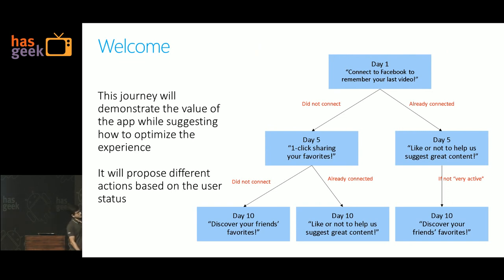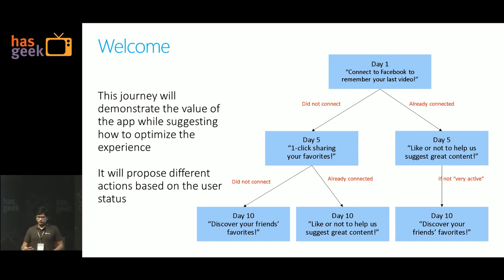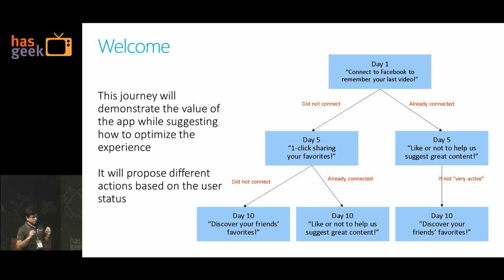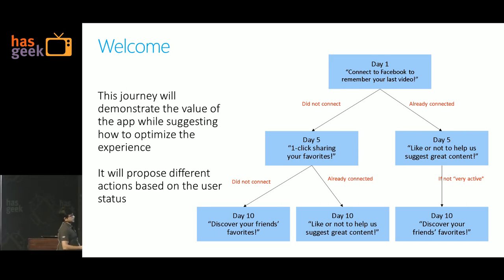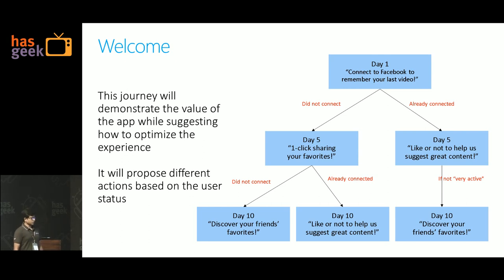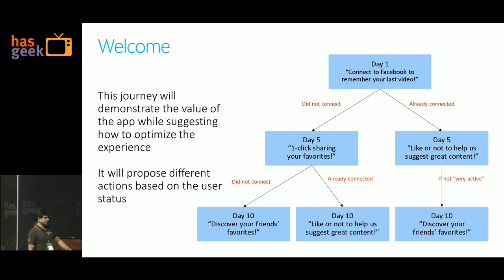Here's one scenario. On day one, we ask them to connect to Facebook — remember your last video — this is something like an experience we all provide, while you sign in to the app. We keep all the cues of videos you're watching, so if you start watching the same video on a different device, you can have a common list of videos you've liked and watched across those devices. You tell this feature to the user but he still doesn't connect. So probably he's already connected — we'll take care of another campaign for that. We can talk about another feature: one-click sharing your favorites with friends. If he still doesn't connect, we go back on day 10 and say 'discover your friends and favorites' — probably the most important feature your app offers that requires signing in. You can track whether each of these level one, two, or three campaigns worked for him or not.